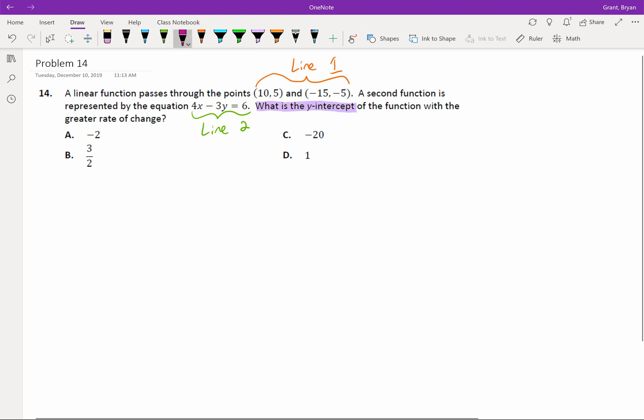They ultimately want to know what is the y-intercept. So we need to remember that all of these answer choices here are going to be y-intercepts. But that's not enough, because what is the y-intercept? Well, they're two different lines, and so they probably have two different y-intercepts. So which y-intercept do we want? We want the y-intercept of the function with the greater rate of change.